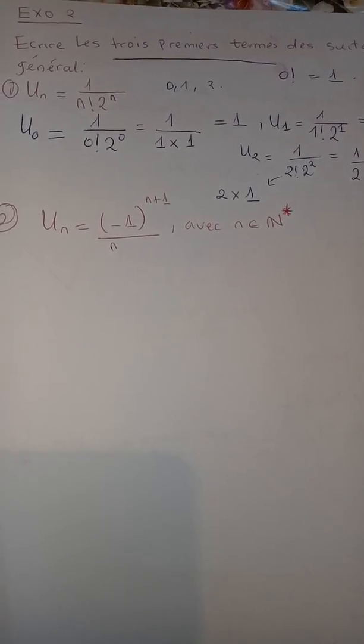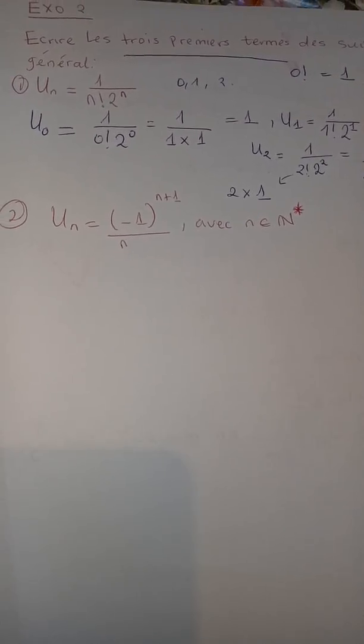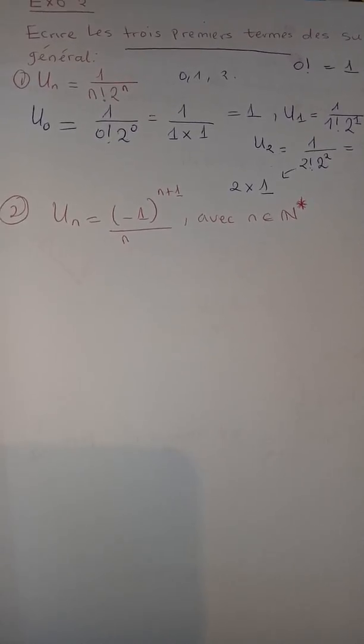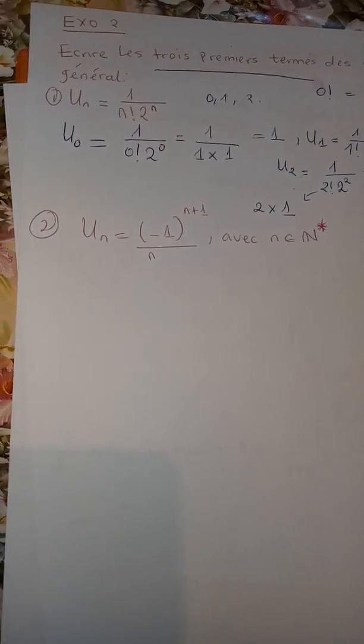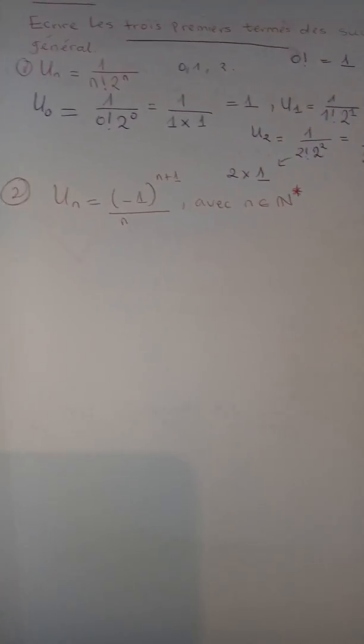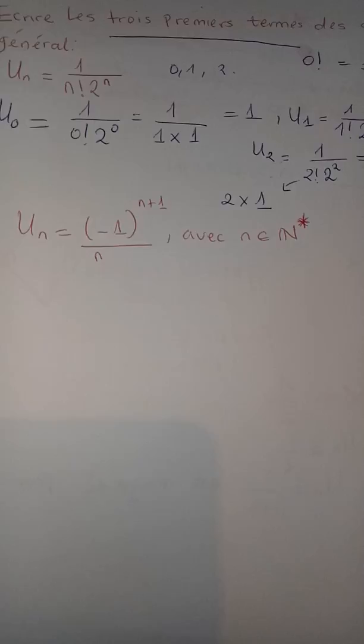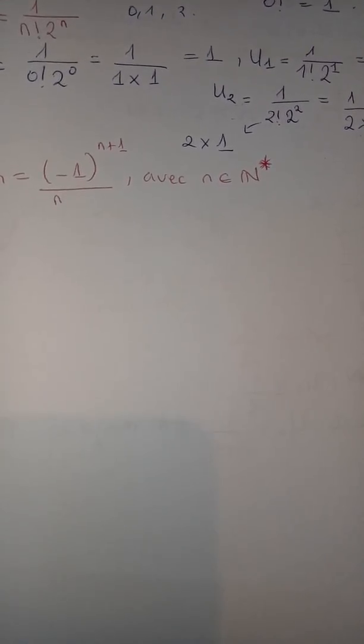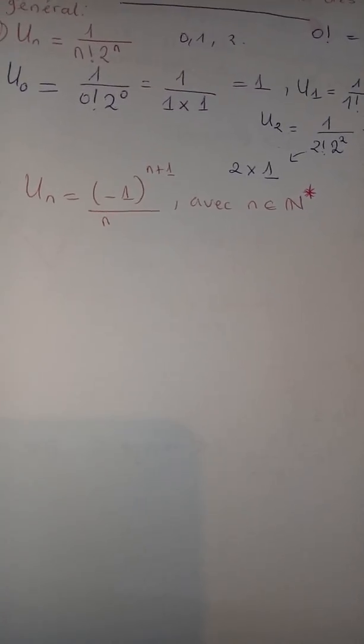The general term is $(-1)^{n+1}/n$ where $n \in \mathbb{N}^*$. Remember, we talked about $\mathbb{N}^*$ at the beginning of this topic on sequences. When we have $\mathbb{N}^*$, it means the numbers start from 1, so zero is not involved.